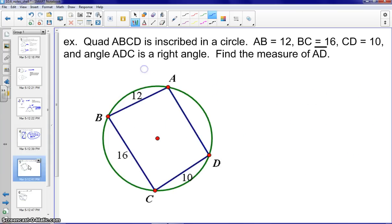Moving on to our third example. Here we have a quadrilateral ABCD inscribed in a circle. Several of this is already marked on the diagram. AB is 12, BC is 16, CD is 10. And let's mark the next one.